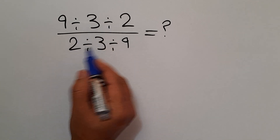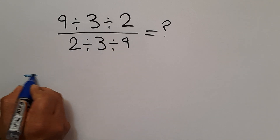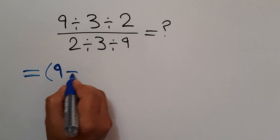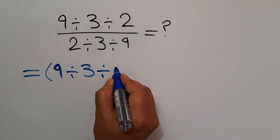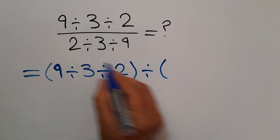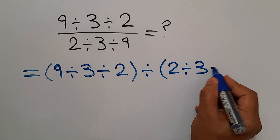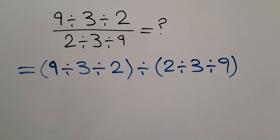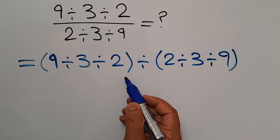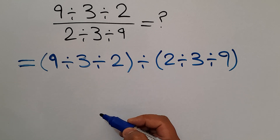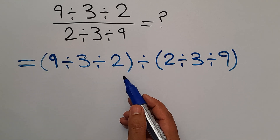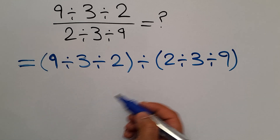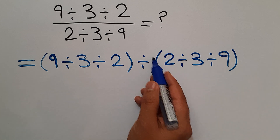Let's go ahead and get started. Our fraction can be written as parentheses 9 divided by 3 divided by 2, divided by parentheses 2 divided by 3 divided by 9 — the numerator divided by the denominator. In this expression, we have two parentheses and one division. Parentheses have higher priority than other operations, so first we do the first parentheses, then the second, and finally the division.